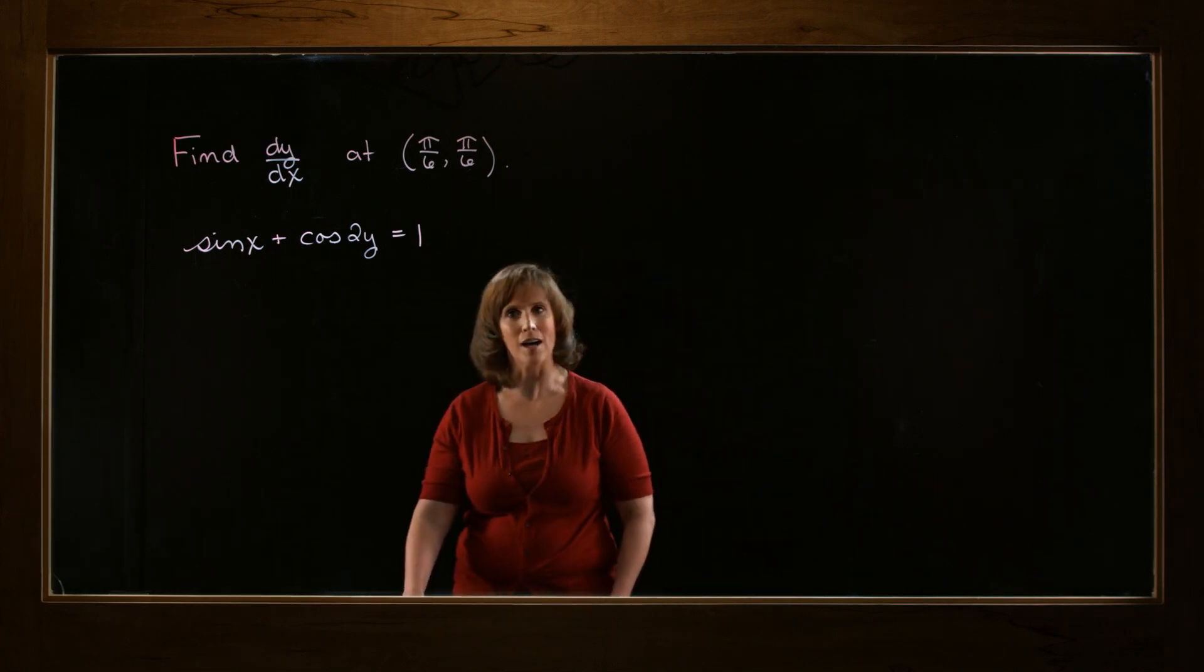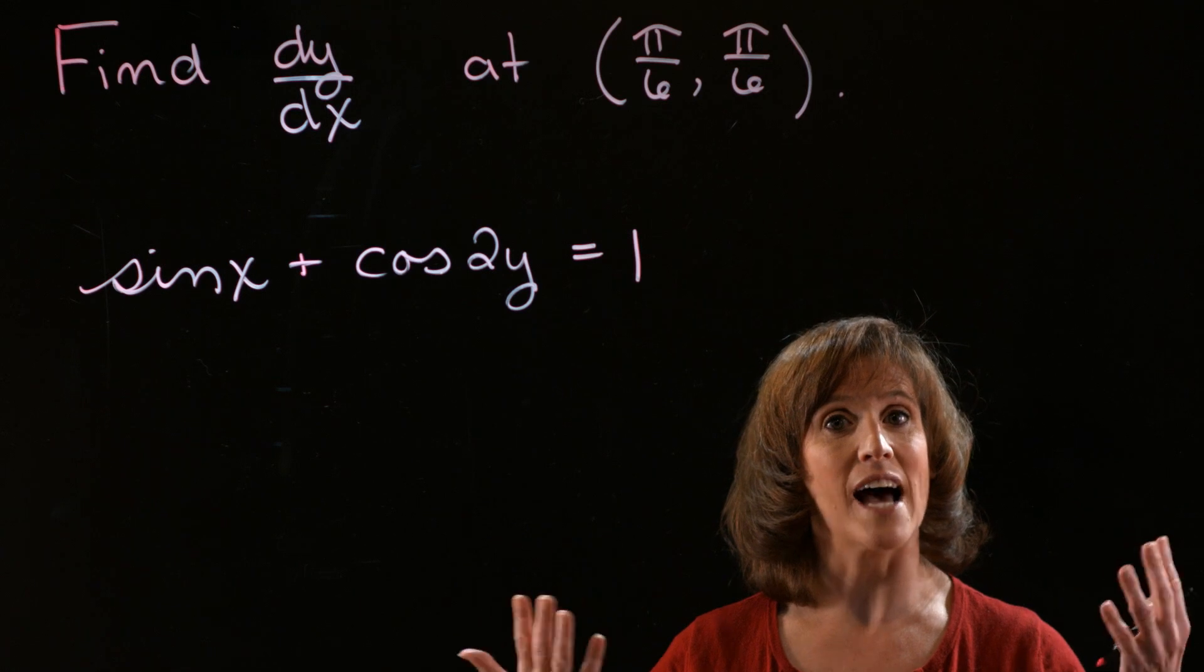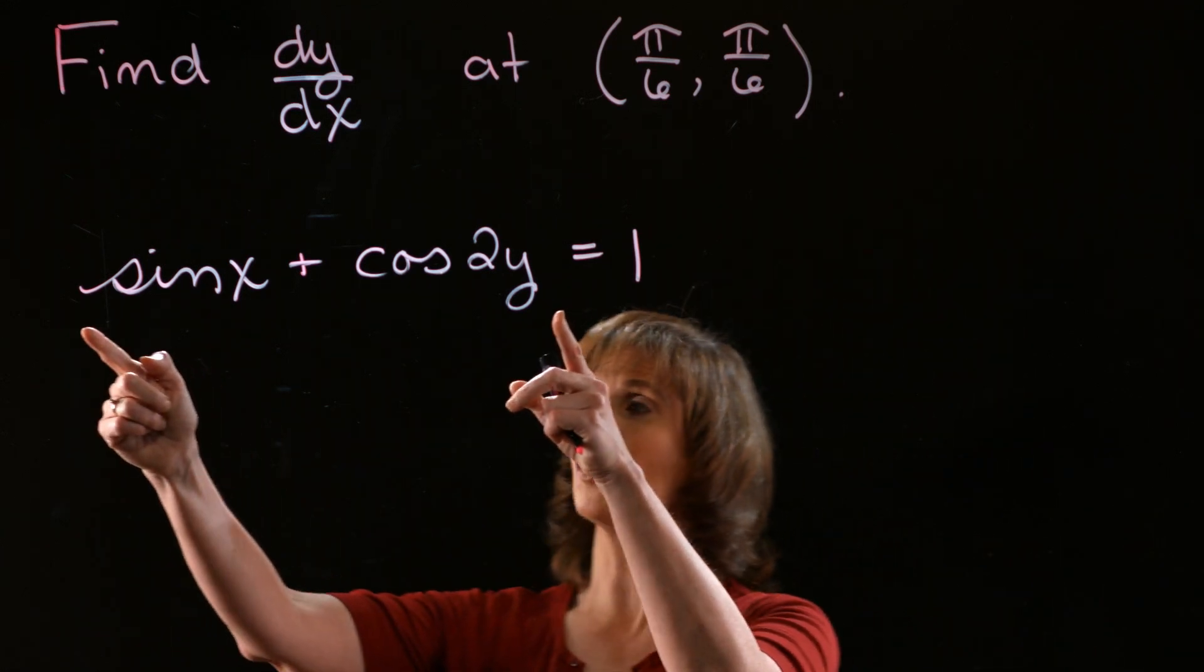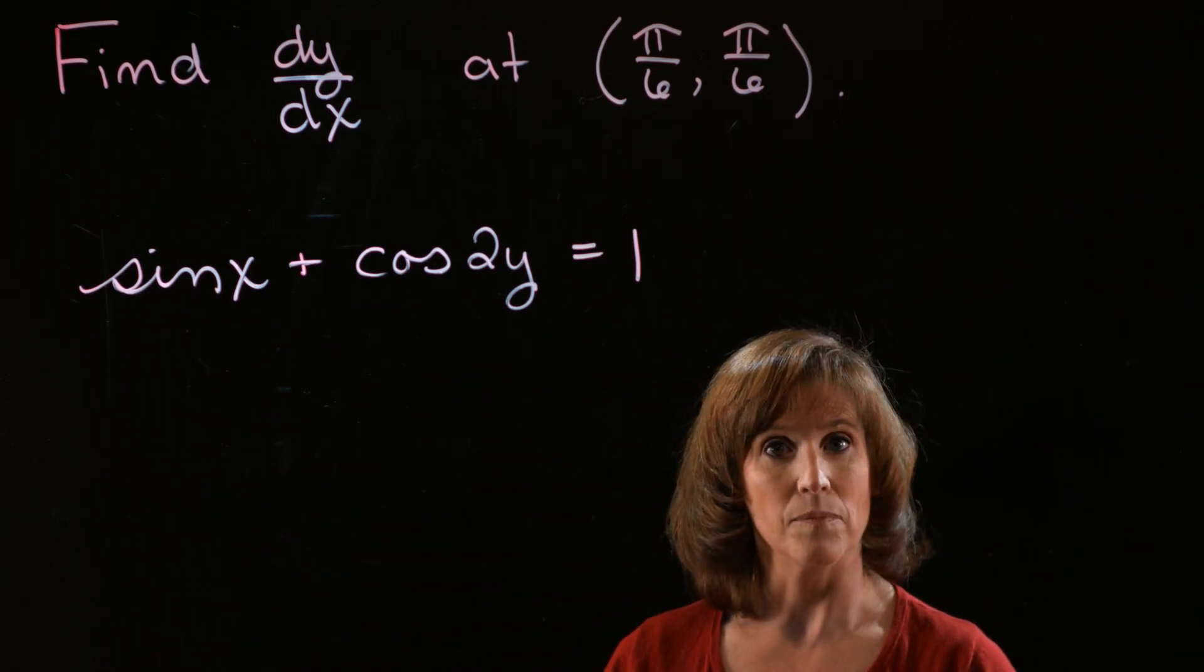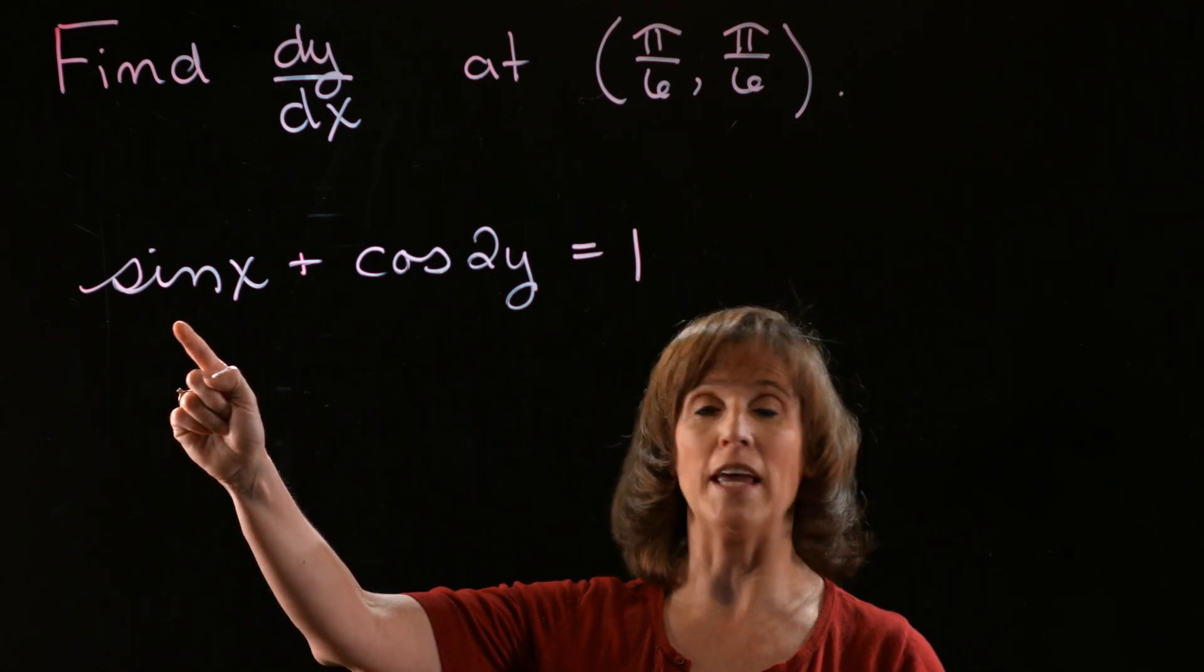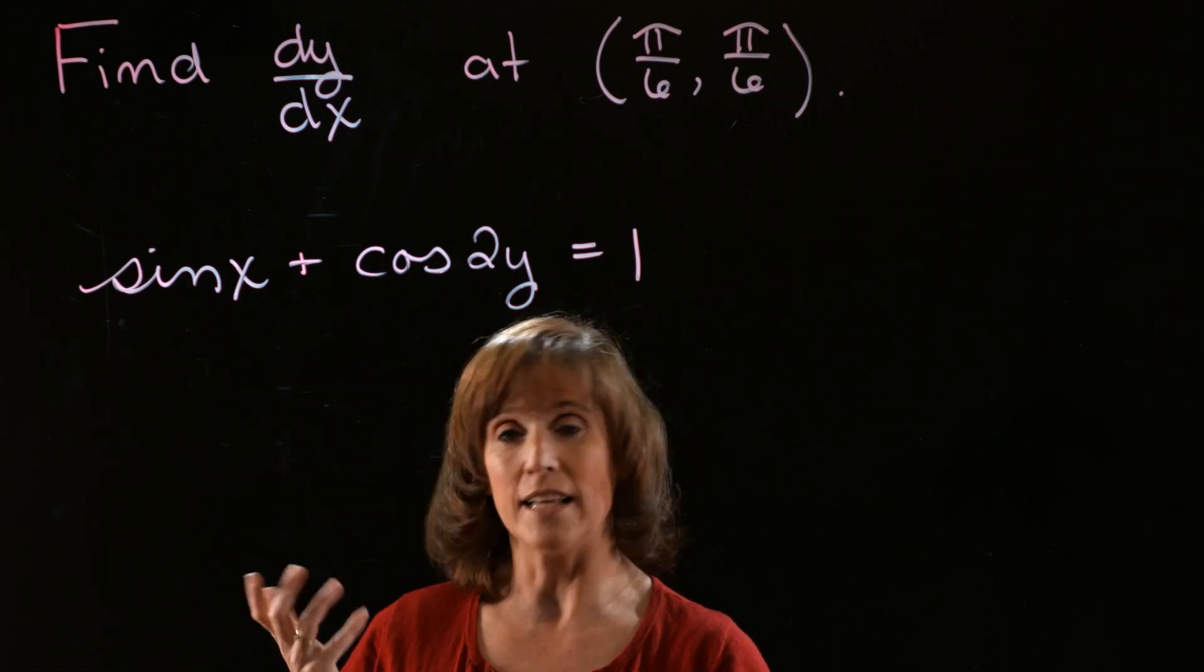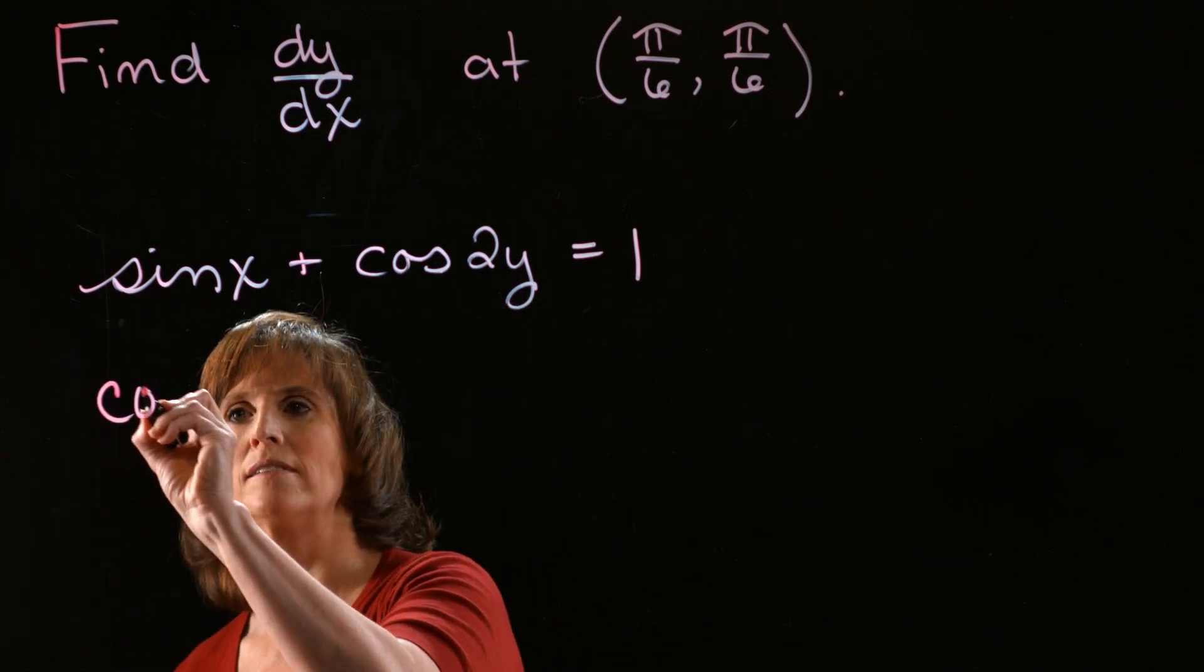So let's go ahead and talk about implicit differentiation. Remember, you want to differentiate both sides of your equation. So I'm going to start with that left-hand side. The left-hand side is a sum, so I'll take the derivative of each piece individually. The first part asks to take the derivative of the sine of x. Well, that's just the cosine of x.